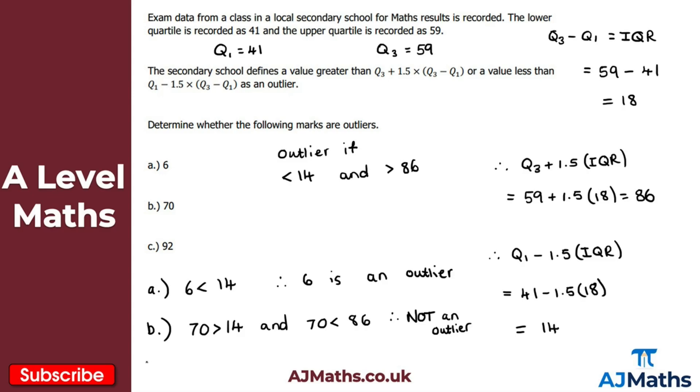And then finally for C here, we've got 92. Well, 92 is greater than 14, but it is greater than 86. So because it's greater than 86, that means it will be an outlier. So 92 is greater than 86, therefore 92 is an outlier.